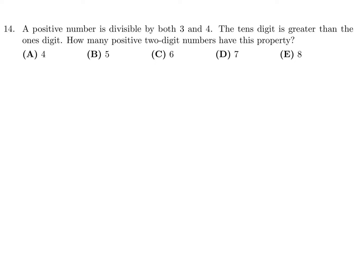A positive number is divisible by both 3 and 4. The tens digit is greater than the ones digit. How many positive 2-digit numbers have this property? If a number is divisible by both 3 and 4, it is divisible by their product, which is 12. So we're looking at multiples of 12.